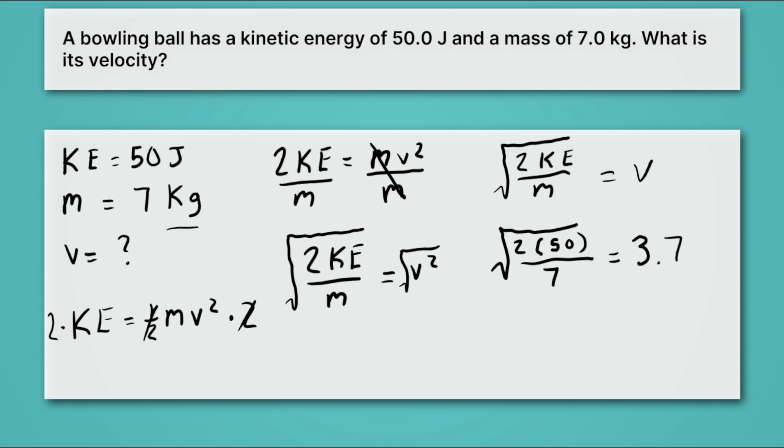3.779. And again we want to take into account sig fig here. Our 50 joules has 3 sig figs, and our 7 kilograms has 2, so we want to round to 2 sig figs. And that's going to give us 3.8 meters per second. We've been able to solve there for the velocity of our bowling ball, starting with the kinetic energy and the mass. So we can use this kinetic energy equation in a variety of ways.